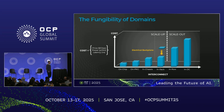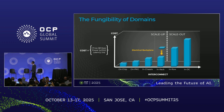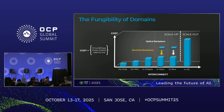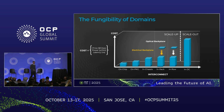What NVIDIA did — they created this electrical backplane, and now you have NBL 72, so you can move the scale-up into the rack. What we see is that now, in order to move that even further, we need an optical backplane. So now with optics — CPO — you can move your scale-up to now in the row.